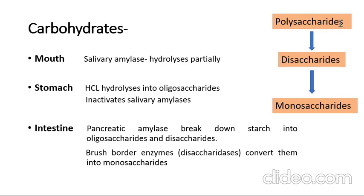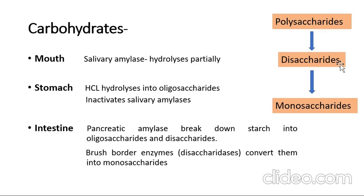During digestion, the polysaccharides are broken down into disaccharides, and then disaccharides are broken down into monosaccharides. Disaccharides like sucrose, lactose, and galactose are two monosaccharide units joined together. For example, maltose is composed of two glucose units, and sucrose is composed of glucose and fructose. The final monosaccharides are glucose and fructose.